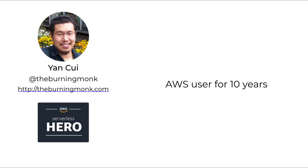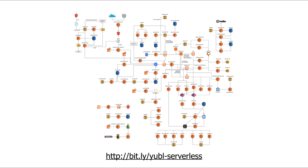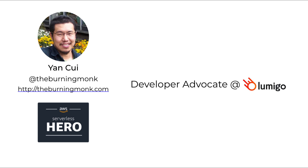My name is Yan Chui. I am an AWS serverless hero and I've been a long-time AWS user for over 10 years now. Over the last couple of years I've been working very closely with serverless technologies, including at Yabo, that social network, where we did that whole transformation within six months.